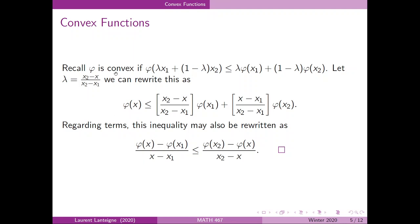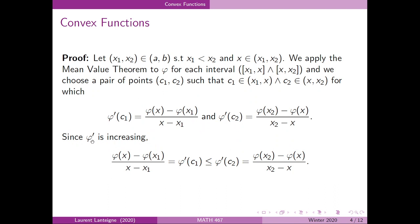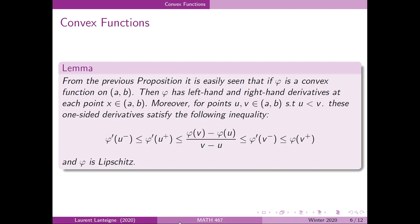Recalling that phi is convex based on the first definition we introduced, if we solve for lambda with x expressed accordingly, we get lambda equal to that expression. Substituting x in terms of lambda, and multiplying by (x2 minus x1), a bit of algebra gives us that phi satisfies the convexity inequality. We also see that having an increasing derivative is an equivalent condition, so both statements are equivalent.